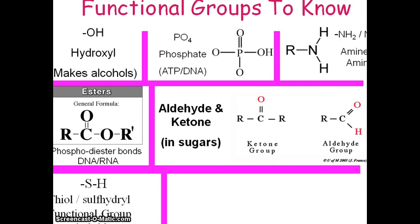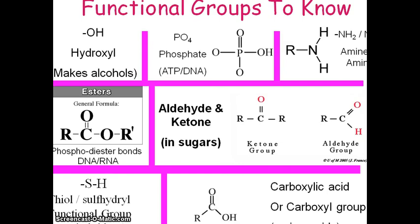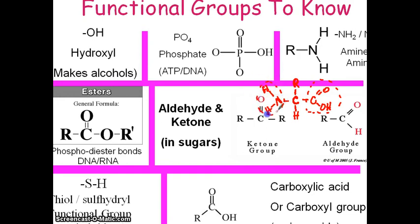This is called a thiol or sulfhydryl group. It's going to be really important when we talk about how proteins fold up — what gives them their specific shape are these sulfhydryl groups. The last one is called a carboxyl group or carboxylic acid group. This is actually the other part of an amino acid. A typical amino acid has a carboxylic acid group on one side and an amino group on the other side — that's why it's called an amino acid.